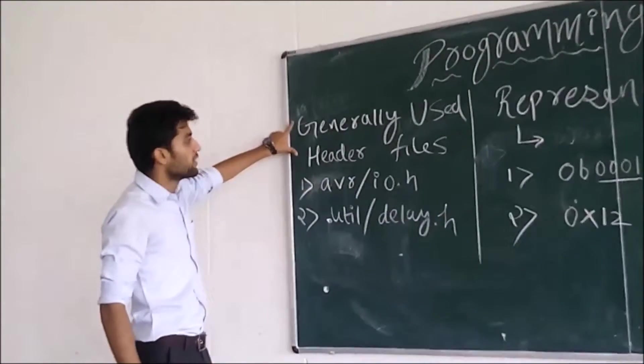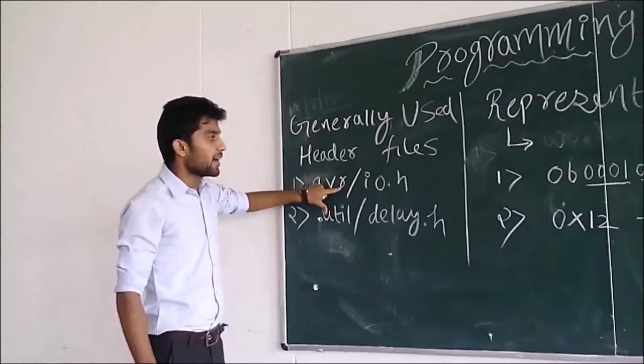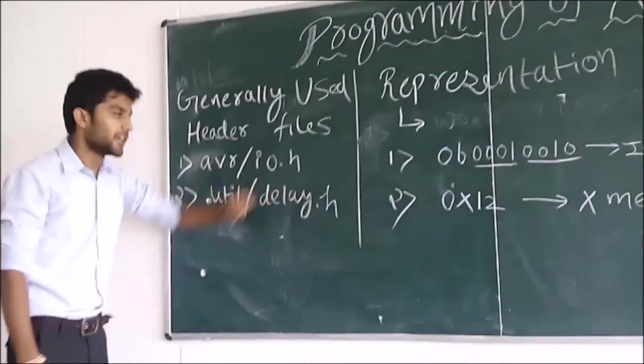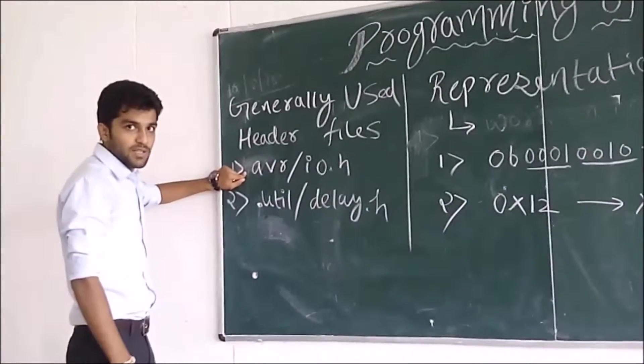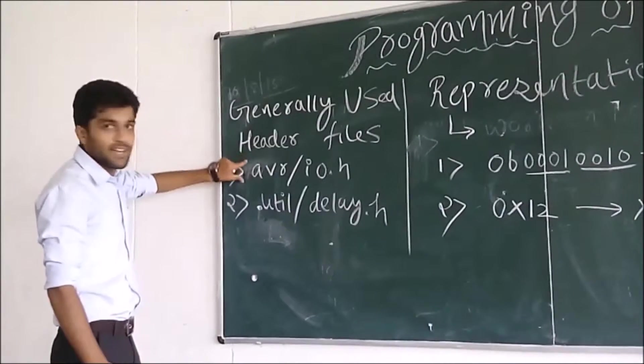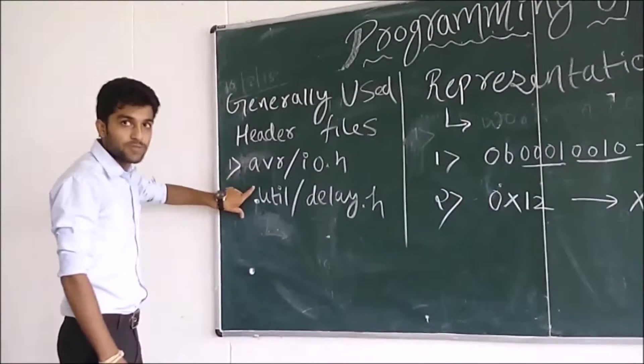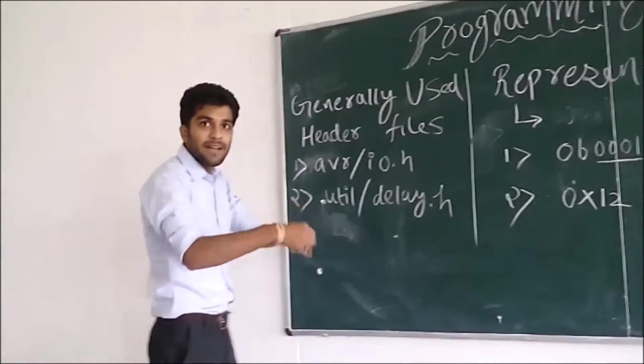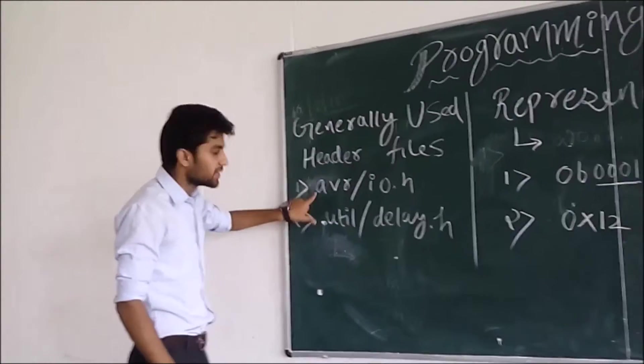Generally used, we use header files. First, AVR/IO.h. Second, util/delay.h. These header files have various functions which are used in AVR. And this header file is used for the delay function. If you want a process to delay by 3ms, 4ms, whatever, then we will use this header file.